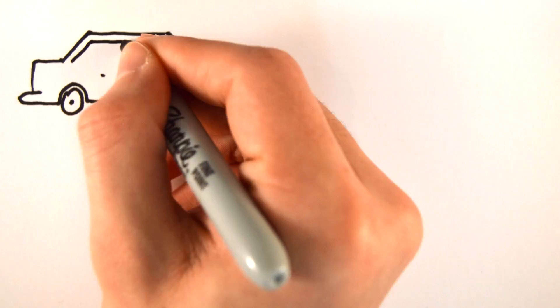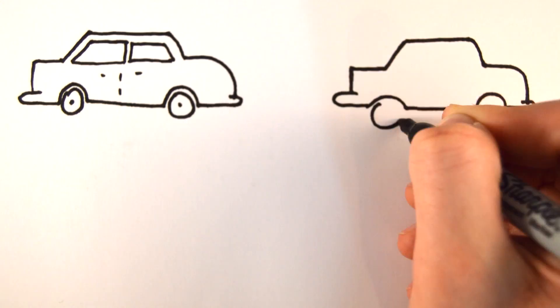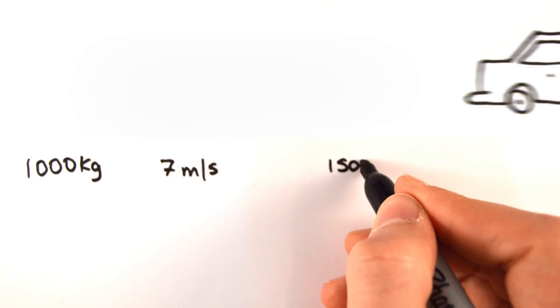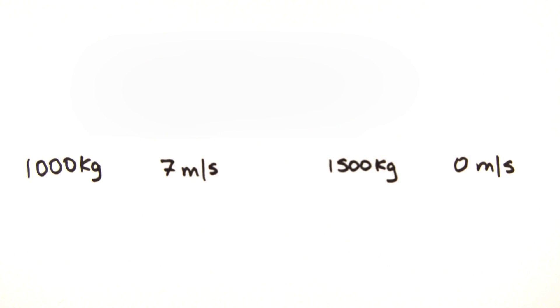If a car has a mass of 1000 kilograms and is travelling at 7 meters per second and hits the back of another car with a mass of 1500 kilograms, which was stationary before the collision, then we can work out the velocity of the two cars as they roll off as a single mass.